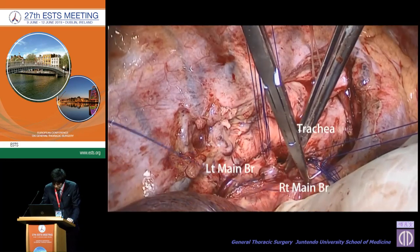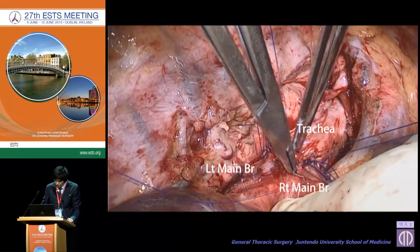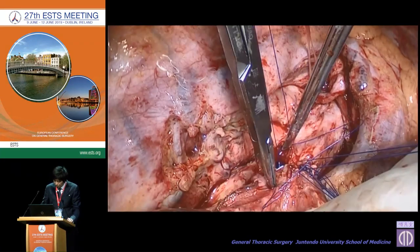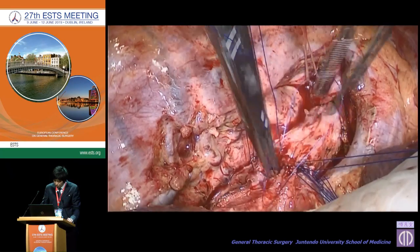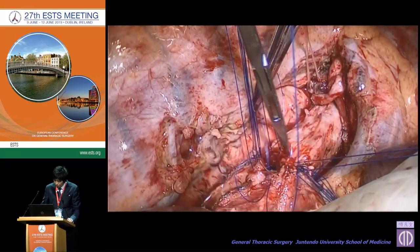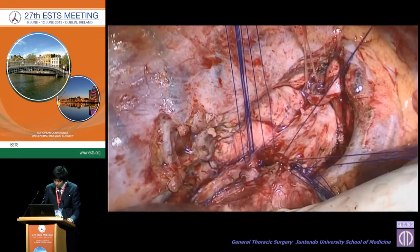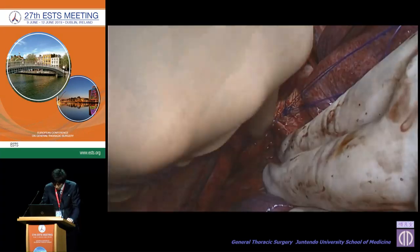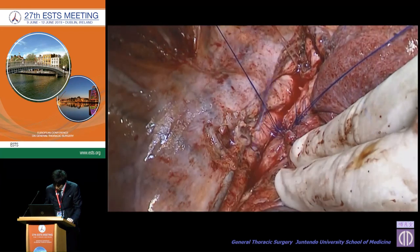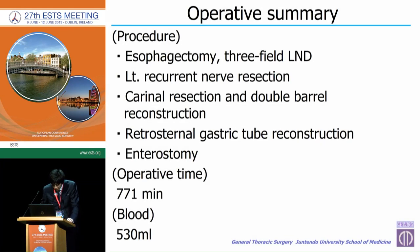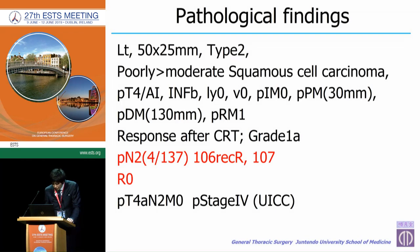No covering was done. After ligation, the anastomosis was finished. Regarding the operating summary, the route of gastric tube reconstruction was retrosternal and enterostomy was also performed. Regarding pathological findings, pathological N2 disease was detected and R0 resection was confirmed.